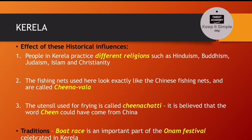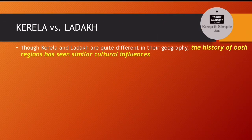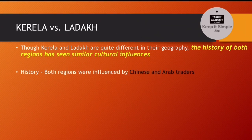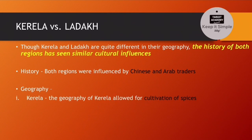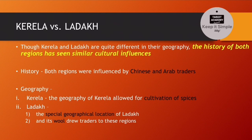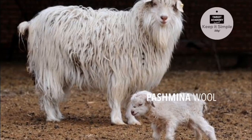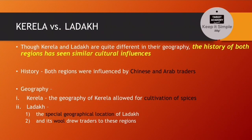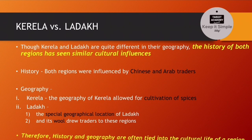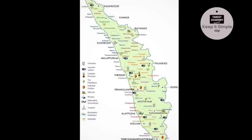तो Kerala के बारे में और Ladakh के बारे में हमने पढ़ लिया। Now let's compare them. Kerala और Ladakh एक दूसरे से geography में काफी अलग हैं, लेकिन हम देख सकते हैं कि इनकी history काफी similar है, जिसकी वजह से इनका culture काफी similar हो गया। For example, दोनों regions were influenced by Chinese and Arab traders. Kerala की geography ने spices की cultivation allow की, और Ladakh की special geographical location ने trade को promote किया क्योंकि वो mountainous passes के पास था, और यहाँ का special pashmina wool भी traders को attract करता था। Therefore, with this example we can see that history and geography are often tied into the cultural life of a region.